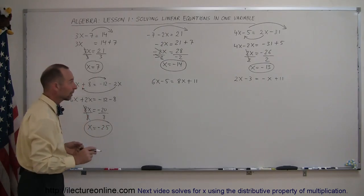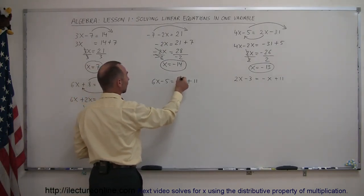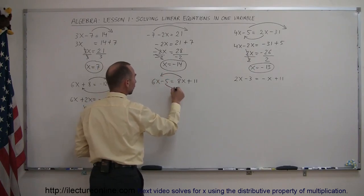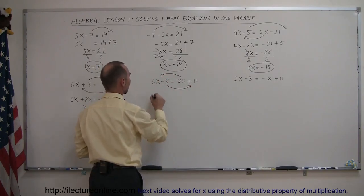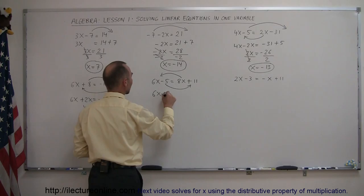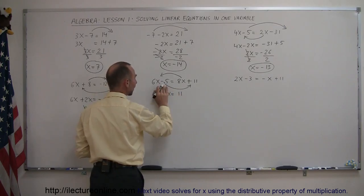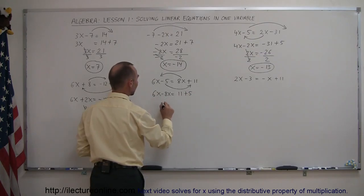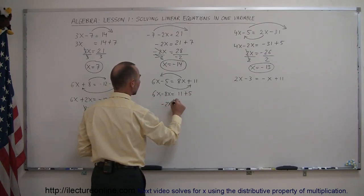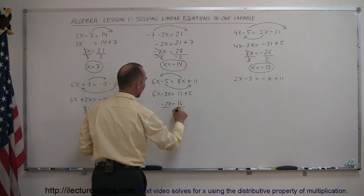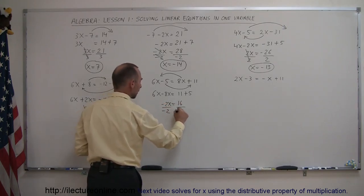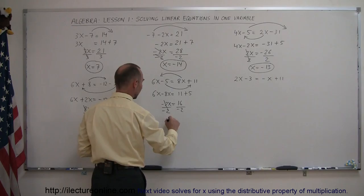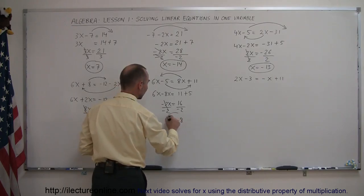Our next example: we move all terms with an x to the left side and all terms without an x to the right, so we have 6x minus 8x equals 11. When the minus 5 crosses the equal sign it becomes plus 5. So 6x minus 8x is minus 2x, equals 11 plus 5, which is 16. Divide both sides by minus 2 — that cancels out — and x equals minus 8.